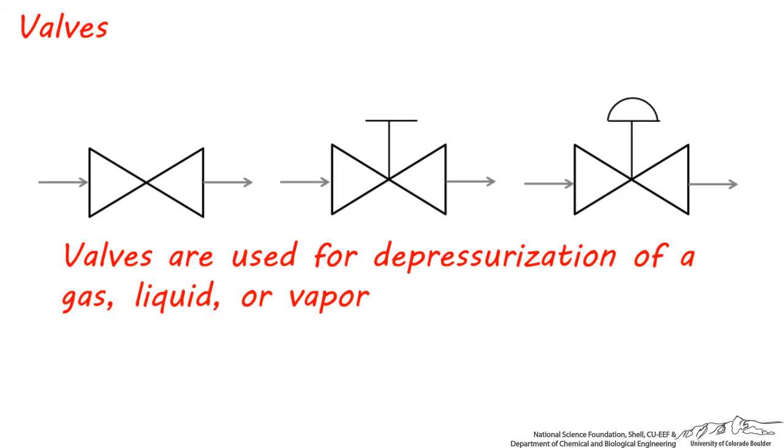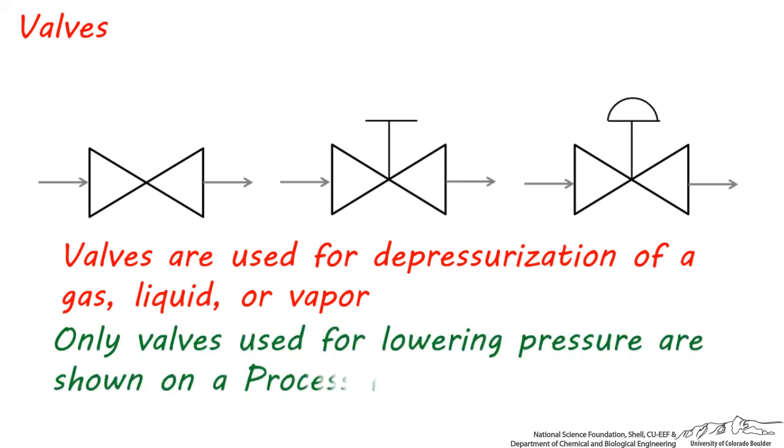Remember that there are probably more than 100 valves in any chemical process, and so including all of these on a process flow diagram would be cumbersome and distracting. So only valves which are used for lowering pressure are shown. Valves on diagrams almost always have a bow-tie shape, though in some simulation software they can look like the shape of a regular outdoor faucet handle.